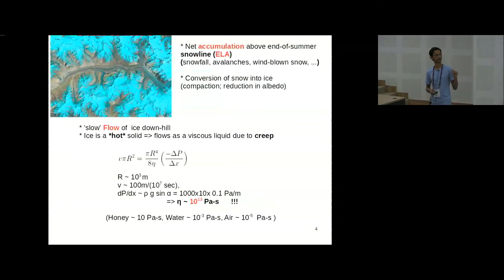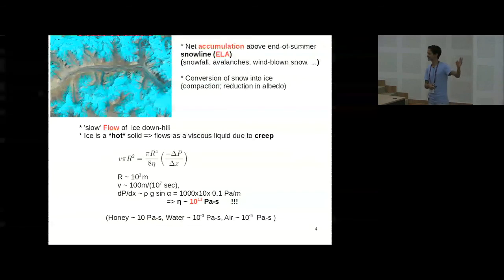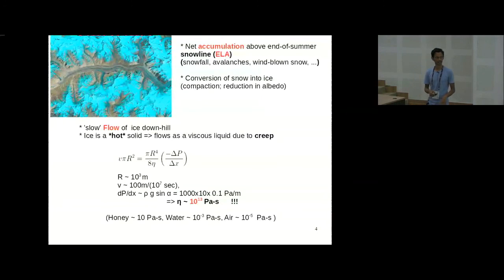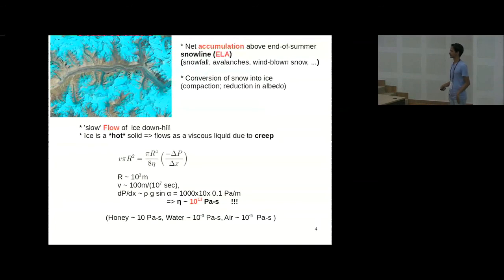If you want to estimate the viscosity — we know the size of the pipe, assume it's water, we know the velocity — when you apply Poiseuille's formula that we learned in class twelve, you get a number like 10 to the power of 13 pascal-seconds. Air is 10 to the power of minus 5, water is 10 to the power of minus 3, honey is 10, and I don't know of any other substance except rock in the mantle. So this is really, really viscous.